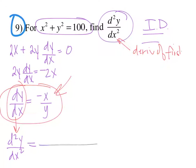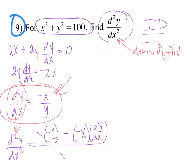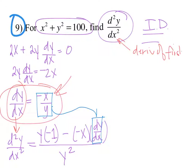So: low d(high) minus high d(low), all over low squared. It feels like you're done, but you can't have a derivative inside your answer. That is okay because we know what dy/dx is — dy/dx is right here — and you will put that in and clean it up.